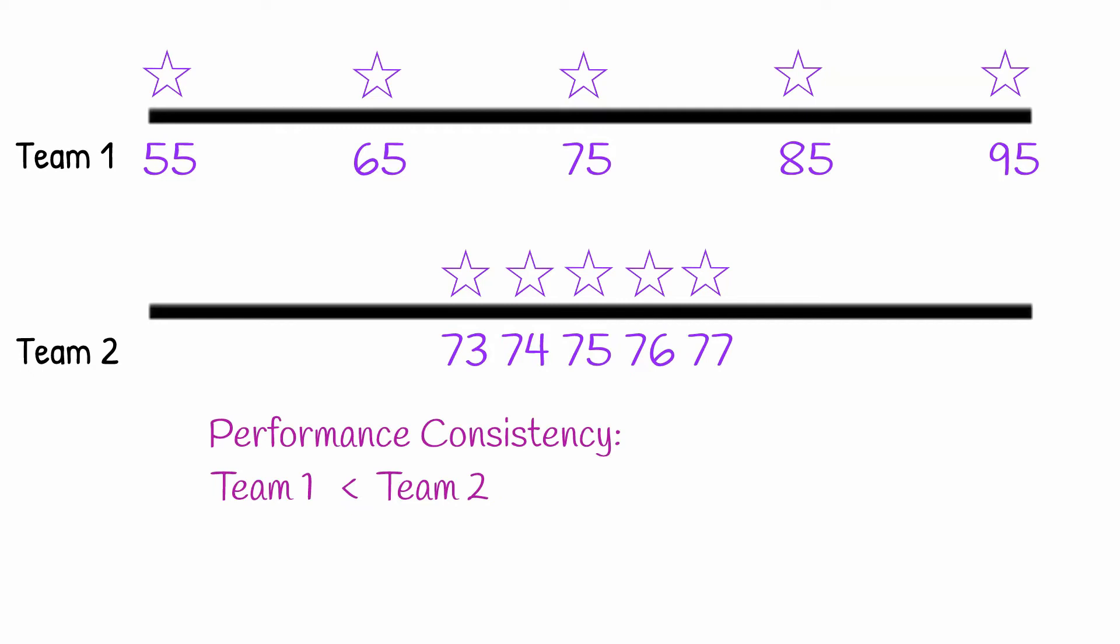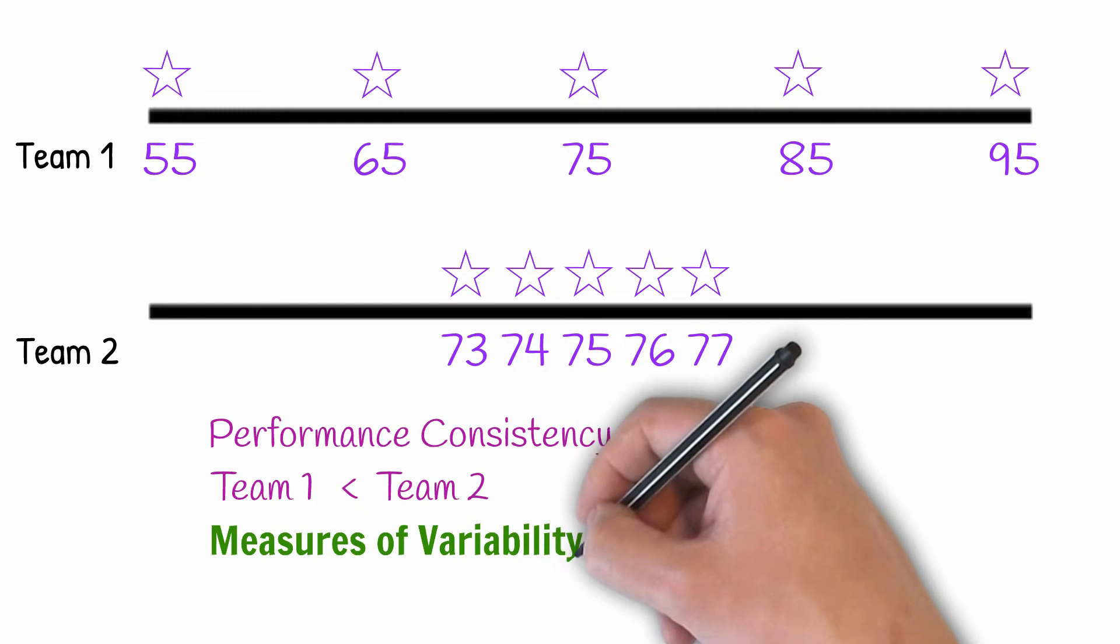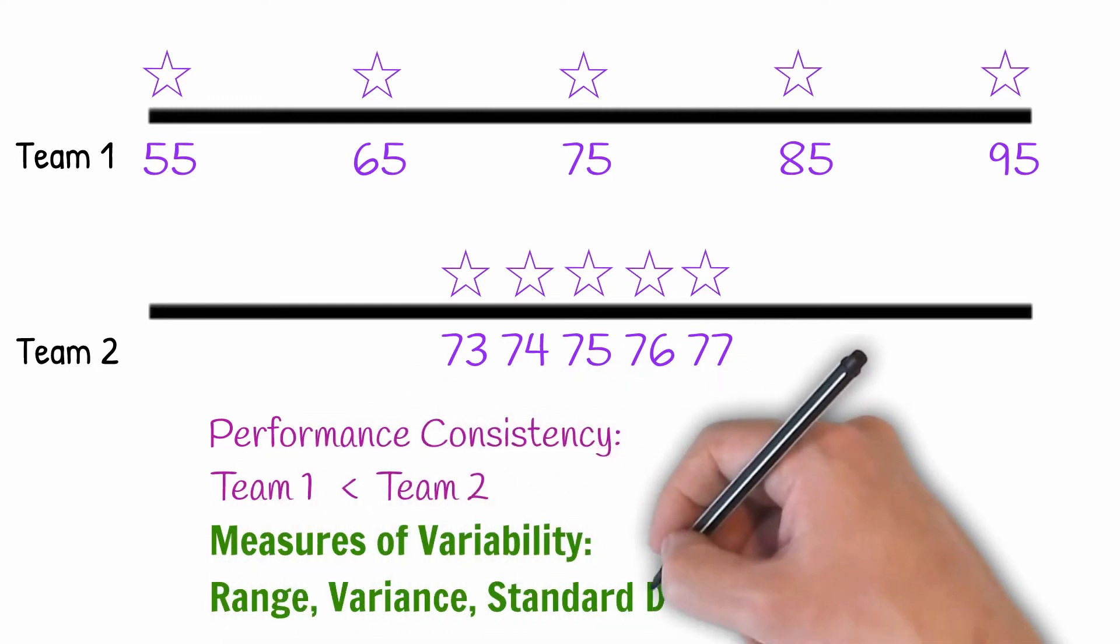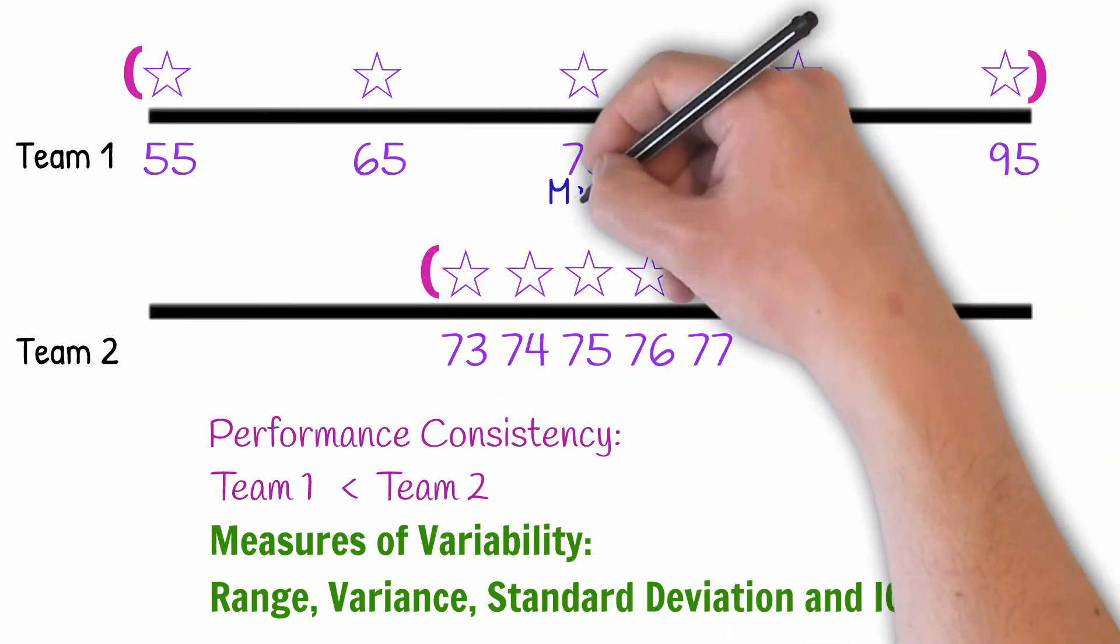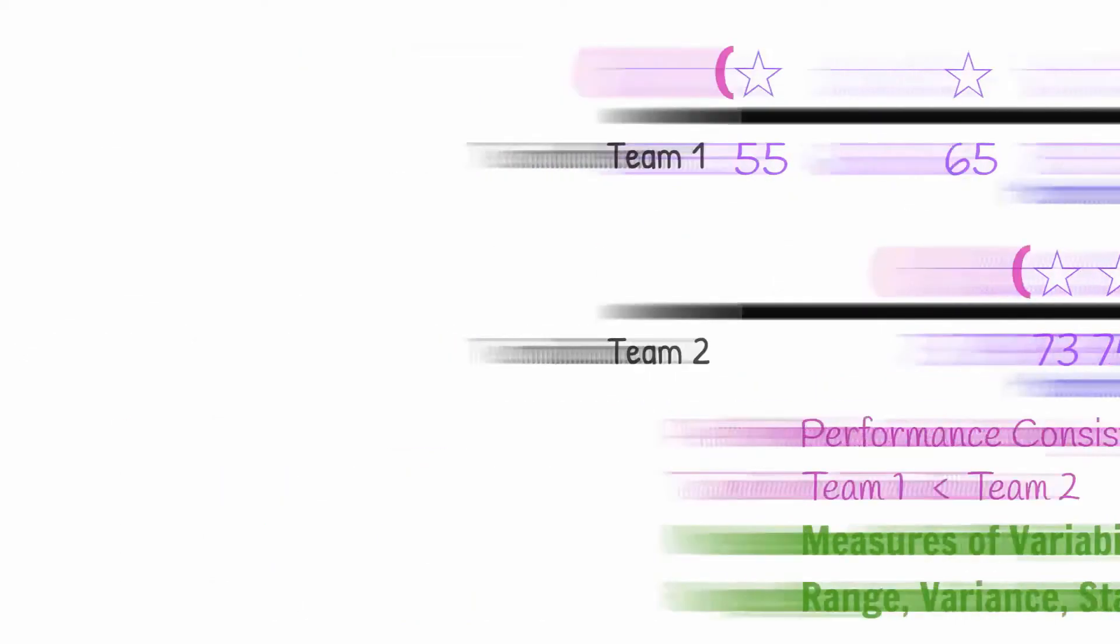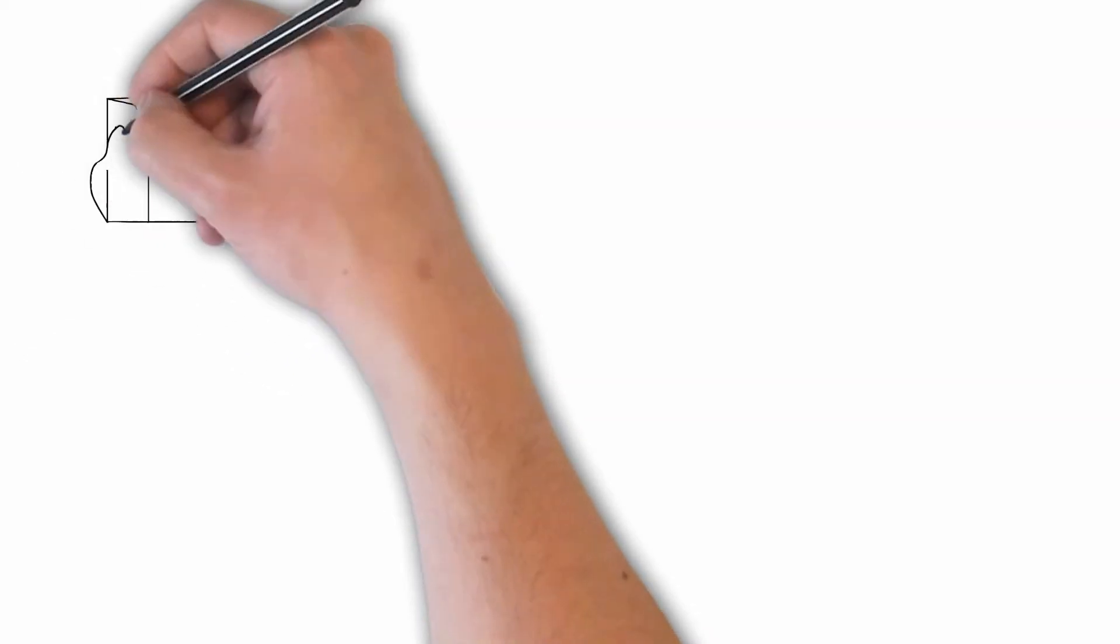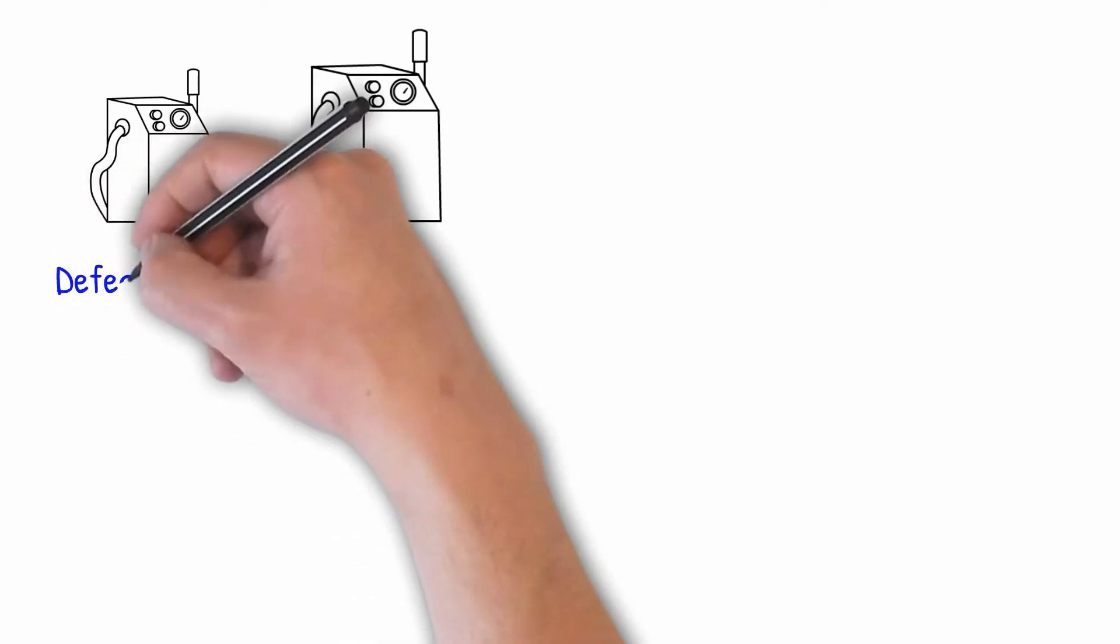Therefore, range, variance, standard deviation and IQR are called the measures of variability or measures of dispersion. They are used when we want to find out how close-knit the data is around the mean. These measures can also be used in comparing performance of machines when we are comparing the number of defective products produced by one machine over the other.